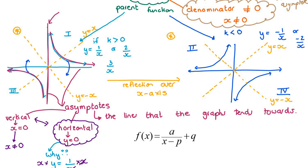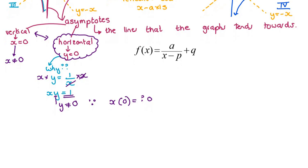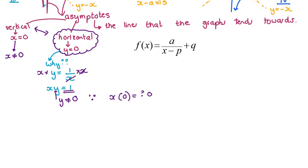To summarize: there are two shapes, two asymptotes at x equals zero and y equals zero, and two axes of symmetry — y equals x and y equals negative x. Once you understand the parent function, you can understand any morphing of it. This is the general formula for all hyperbolas.